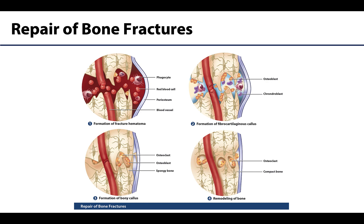Cells from the periosteal region called fibroblasts will move into the fracture site and create an area called the fibrocartilaginous or soft callus. This soft area serves as an intermediate — over time, that fibrocartilaginous callus will be replaced by a bony callus. The bone will replace the cartilage in that area, and you are left with a relatively large bony callus, which will be remodeled over time to repair the bone as close as possible to its original shape and size if all factors are right.